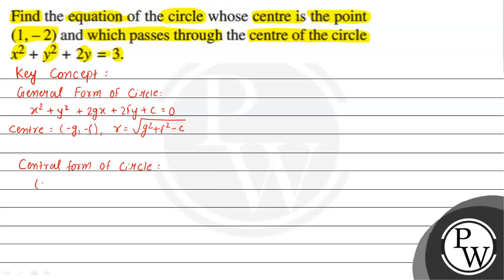The next form is the central form of a circle, given by (x − h) squared plus (y − k) squared is equal to r squared, where the center of the circle is (h, k) and the radius is r. The other key concept we use here is the distance formula.